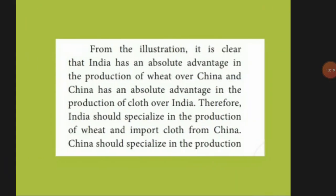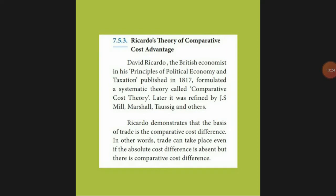Next is Ricardo's theory of comparative cost advantage. Ricardo was a British economist who published this in 'Principles of Political Economy' in 1817, calling it comparative cost theory. It was later redefined by J.S. Mill, Marshall, and Ohlin. According to Ricardo, trade can take place not only with absolute cost differences but also with comparative cost differences. A country can gain from trade when it produces at a relatively lower cost.